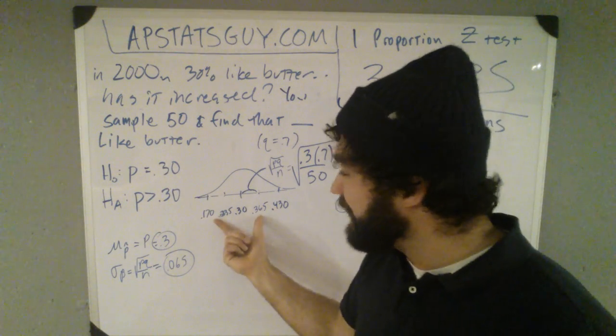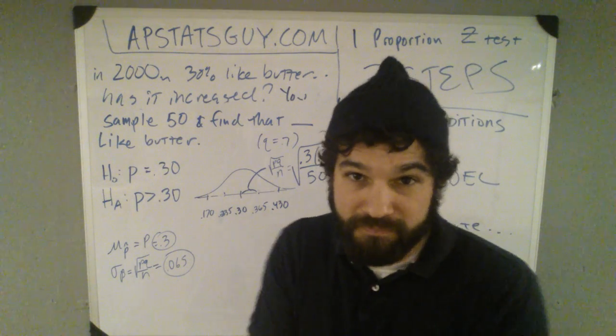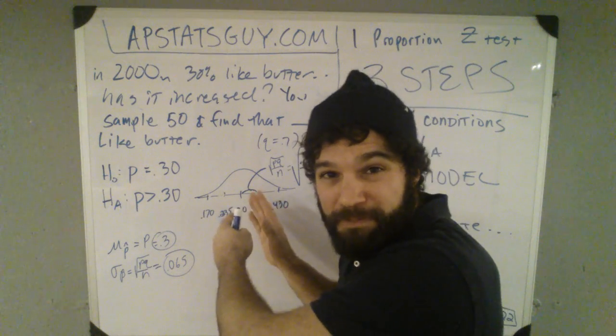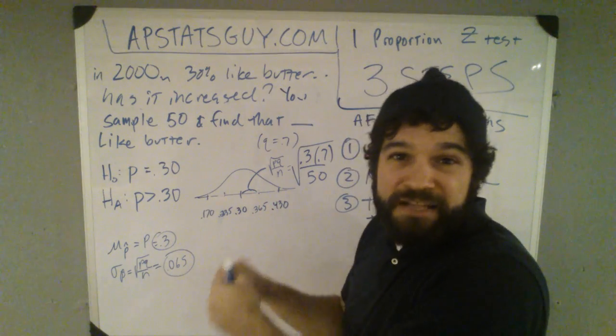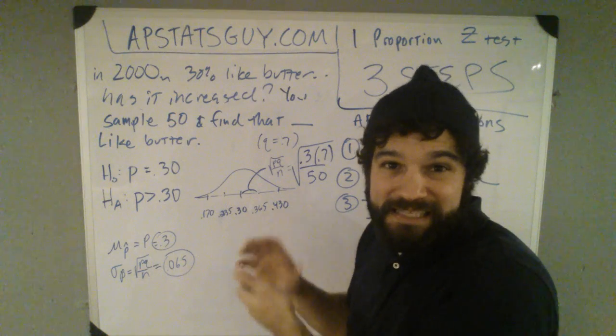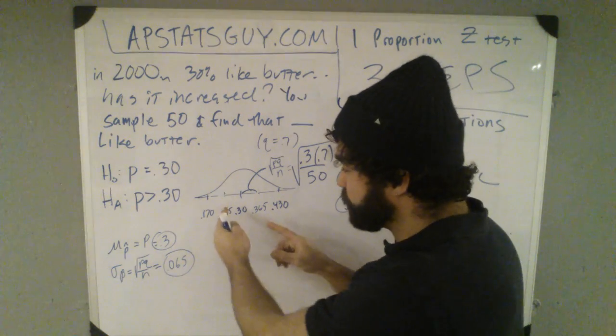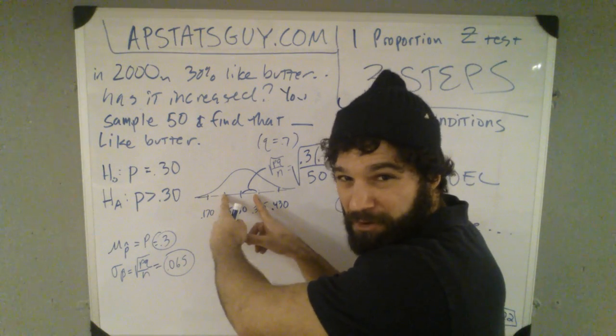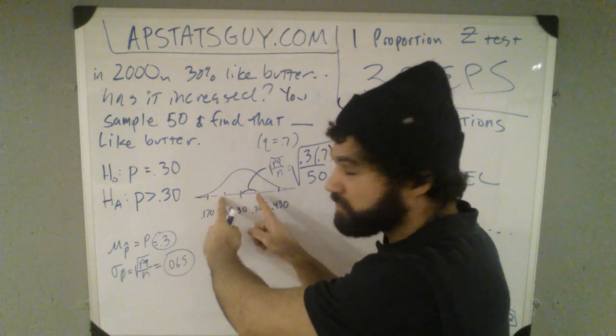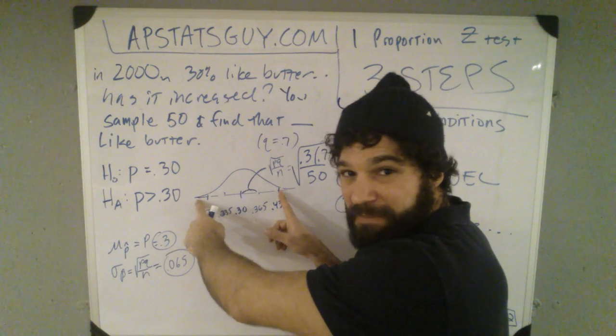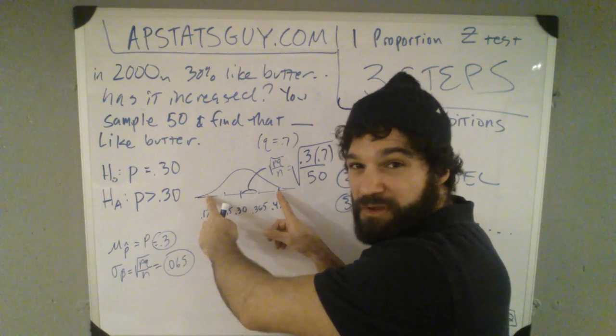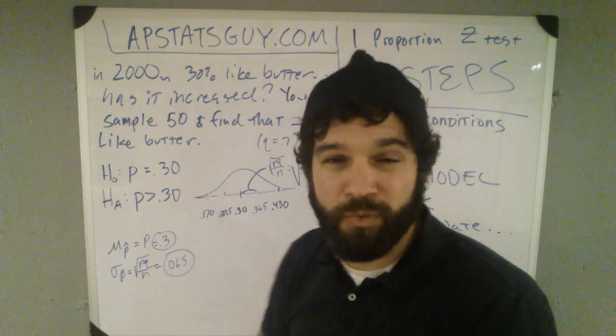So this tells me that, this is what it's saying, it's saying here's where my sample statistics are going to probably be. If I took a ton of samples, 68% of my samples, they'd be between 23% and 36% butter likers, if the null were true. 95% of my samples should have between 17 and 43% butter likers, if the null were true.